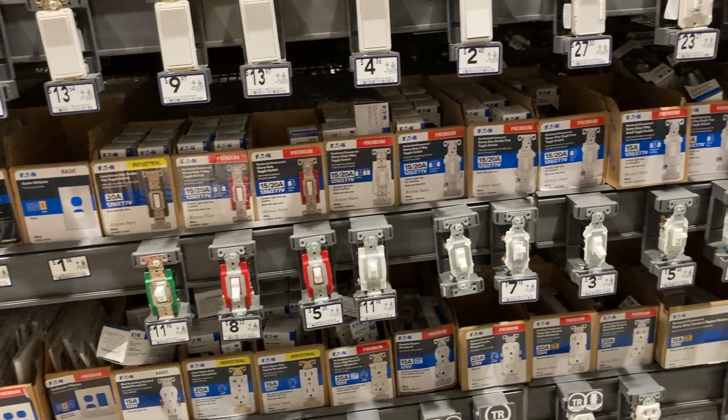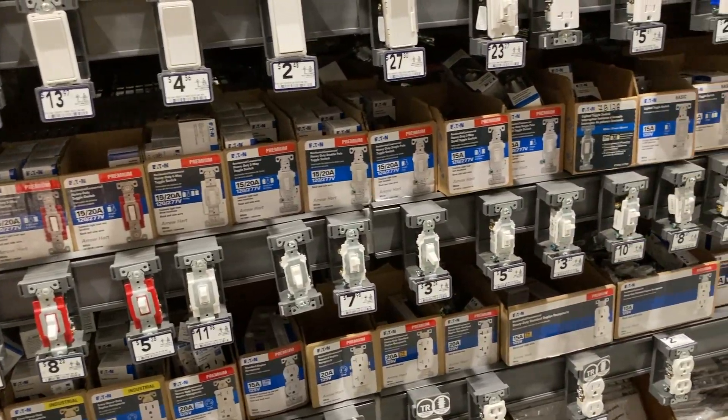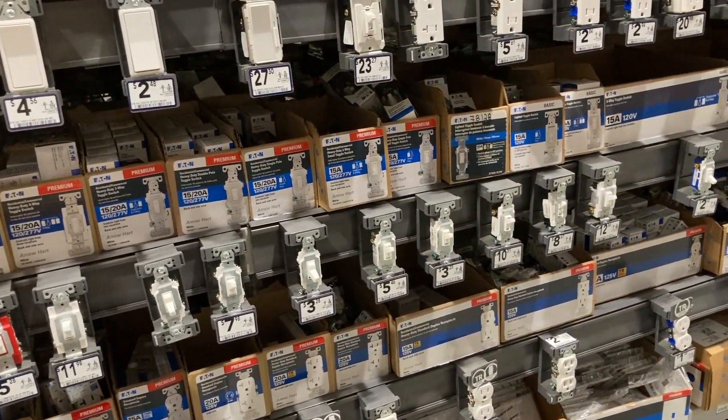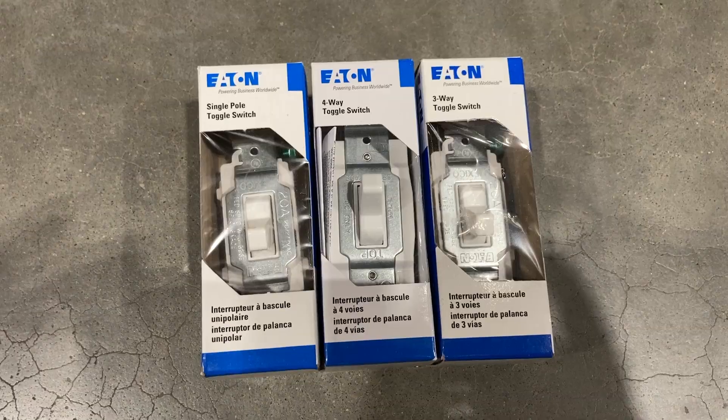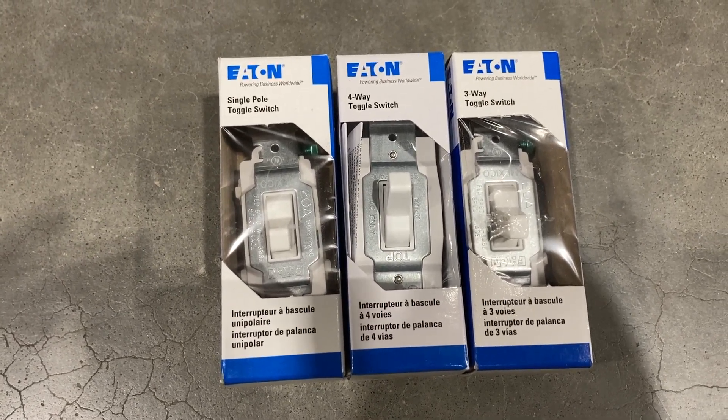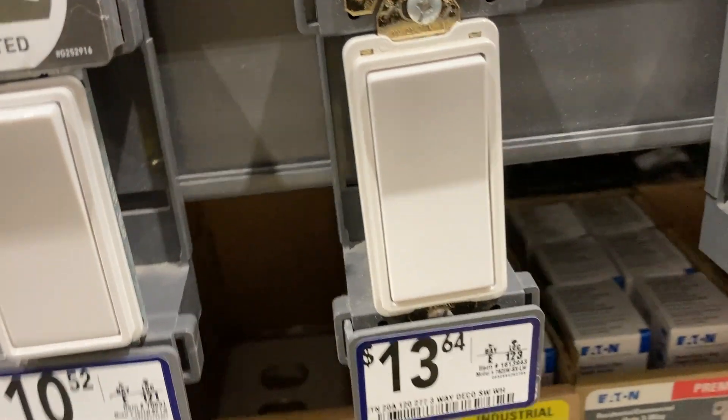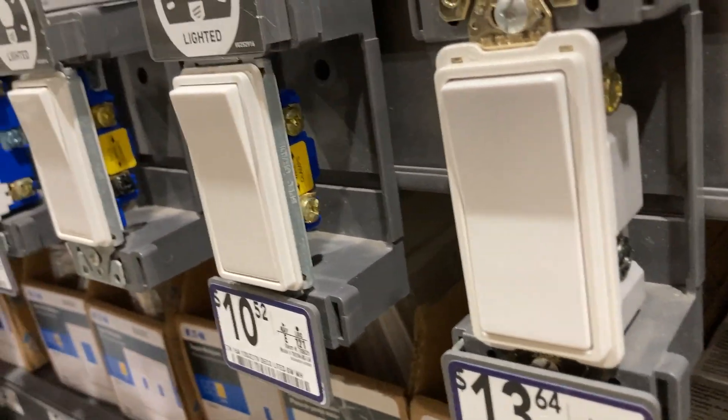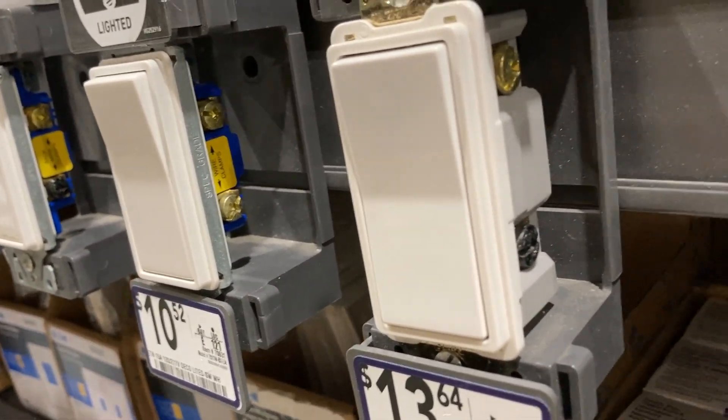I did a video a while back on installing some LED recessed light fixtures, and those fixtures were on a four-way switch loop. In other words, you could turn the lights off and on from three different locations. I thought I would review how a four-way switch loop is wired.